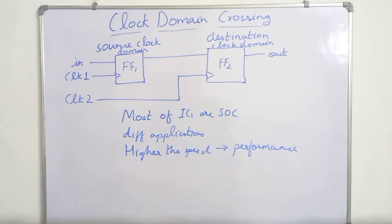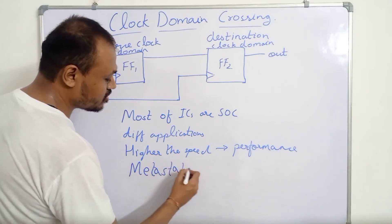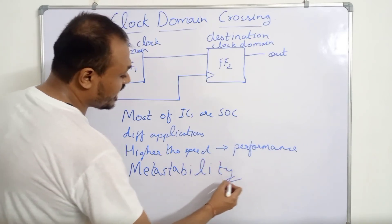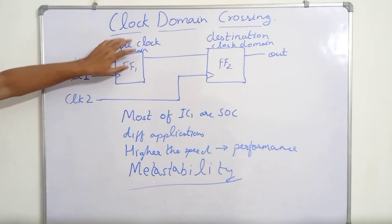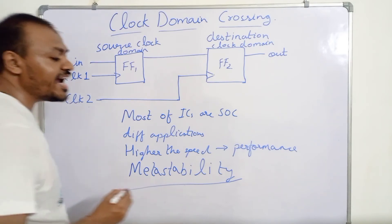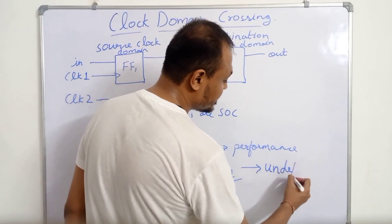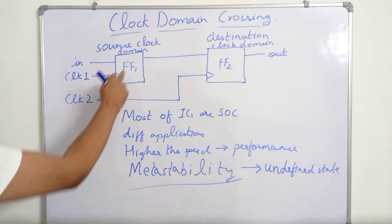Any clock domain crossing has the potential to give rise to several data integrity issues, and one of the most common is called metastability. Our clock domain crossing can give rise to metastability, which means the signal is neither at level 1 nor at level 0 — the signal is in an undefined state. In this example, the output may be in an undefined state.